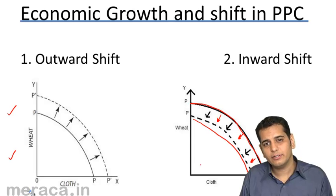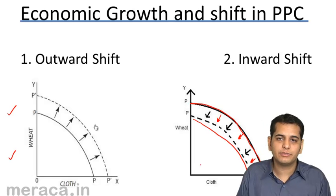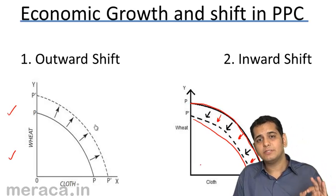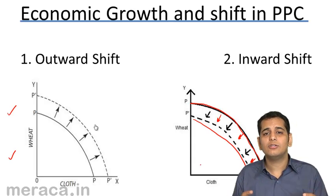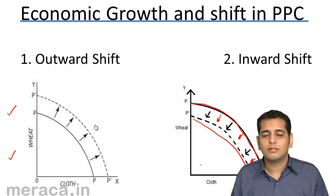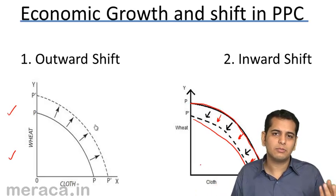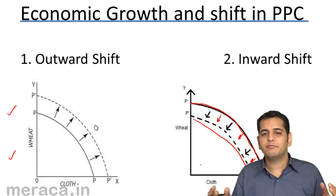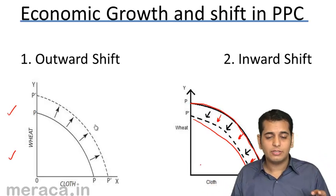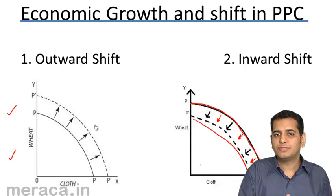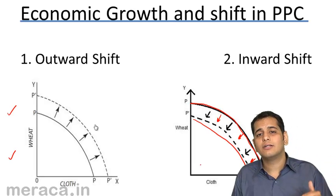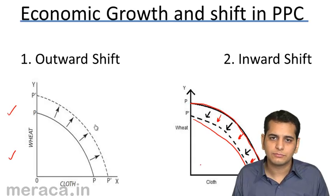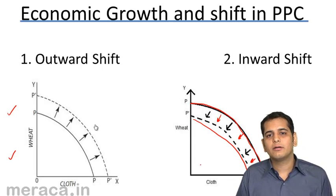So either way, the PPC curve can shift outward or inward. When the PPC curve shifts outward, it leads to economic growth of the nation because production is increasing, which leads to an increase in GDP — gross domestic product, the number of goods and services produced in a country. When GDP rises, the country is developing. However, when the PPC curve shifts inward, the country is decelerating and facing a recessionary trend or recession. This brings us to the end of the topic of production possibilities curve.